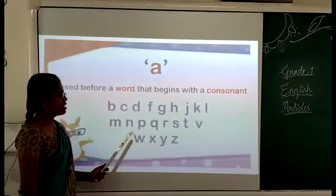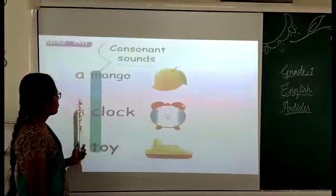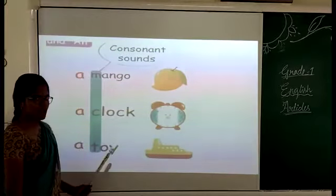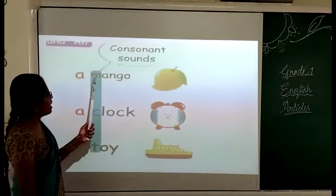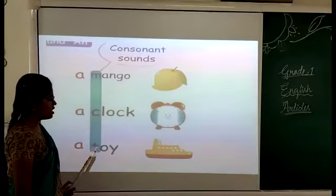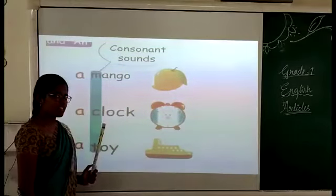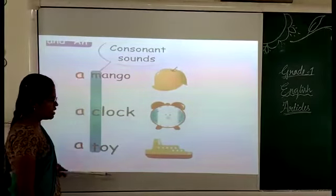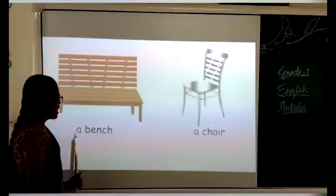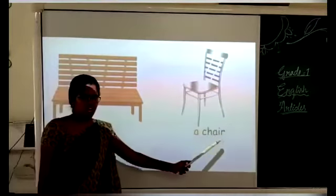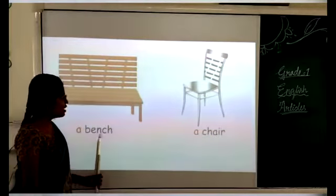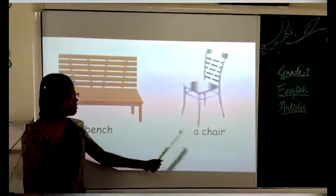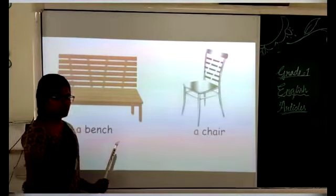Let's see some examples. A mango, a claw, a toy — M, C, and T are consonants, so we use A before these words. A bench, a child — B and C are also consonant letters, so we use A before these words.